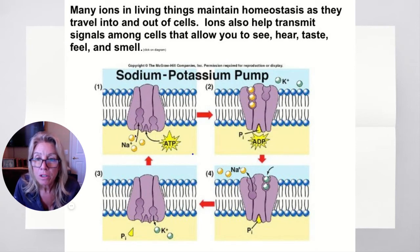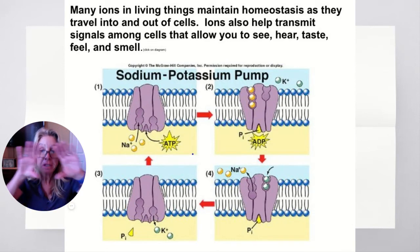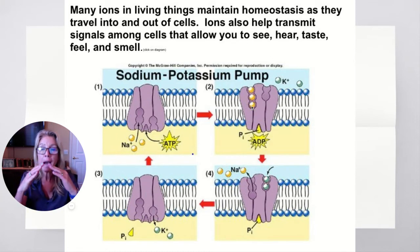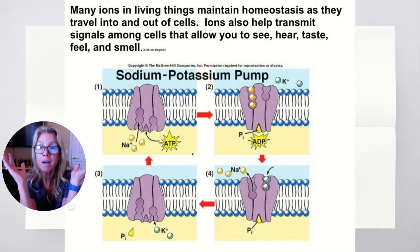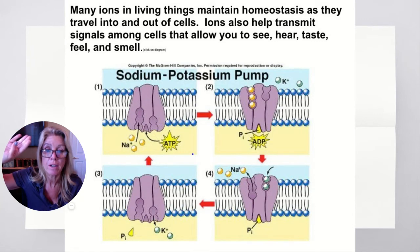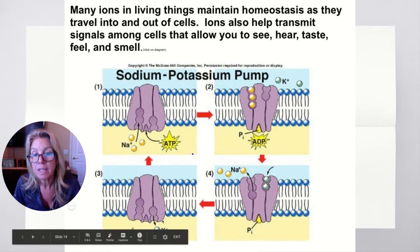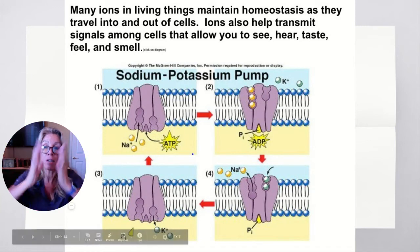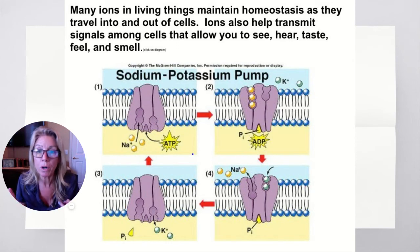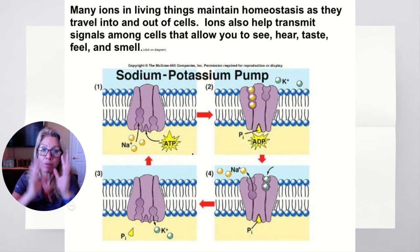When that phosphate from ATP attaches on, the protein changes its shape and opens up on the other side — those three sodium ions are then on that side of the membrane, but it costs you energy. It now creates a vacancy for two potassium ions to bind, and then they are released to the interior. So: three sodiums out, two potassiums in. This is how your nerves work, how your muscles work — creating this concentration gradient difference.